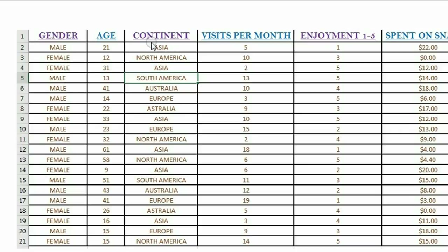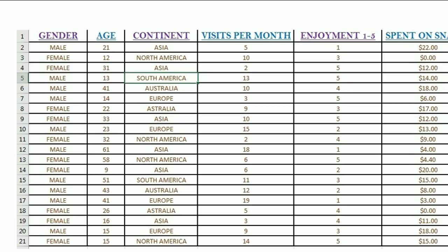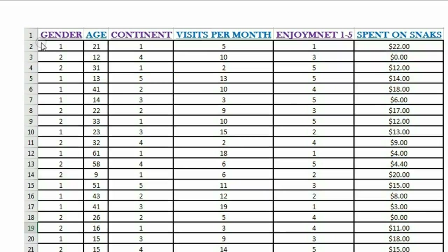Look closely at gender, look closely at continent. This is what the data sheet would look like if we changed it. Previously it would be male, female, female in observations one, two, and three. But we changed male to number one and female to number two. So now there are numeric values that correspond with the non-numeric values, where one is male and two is female.